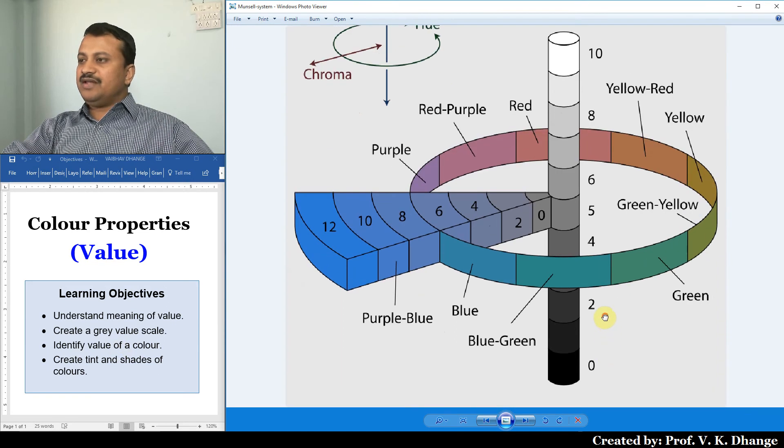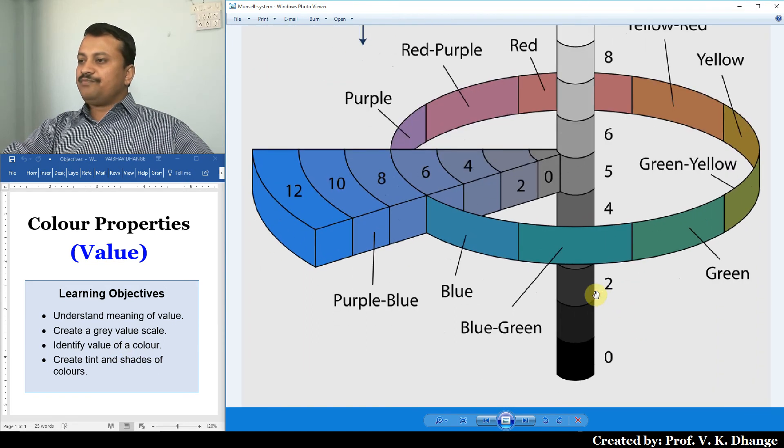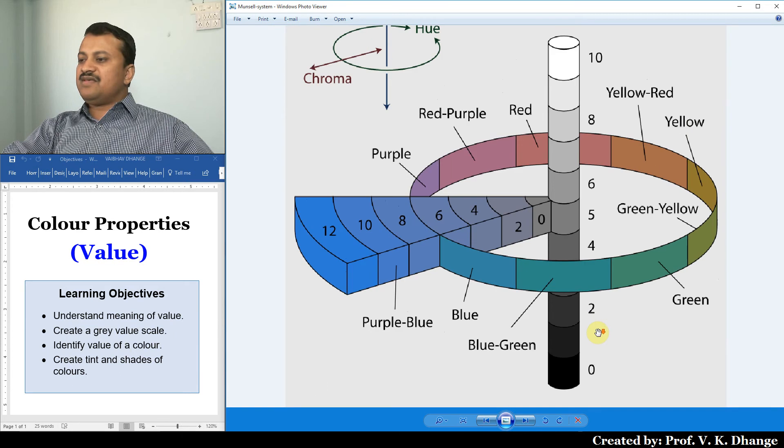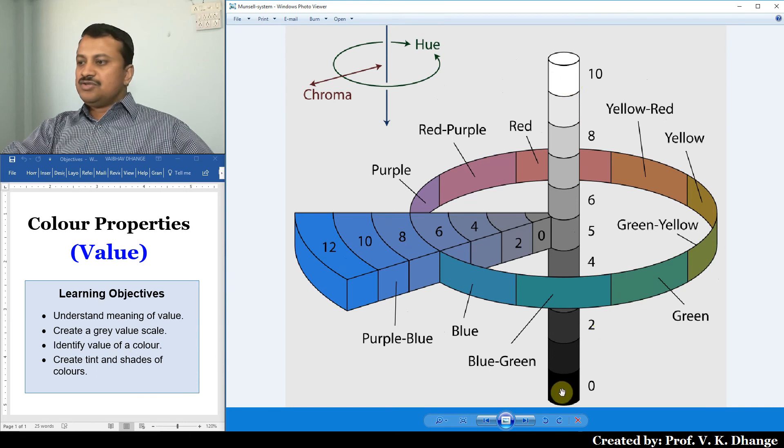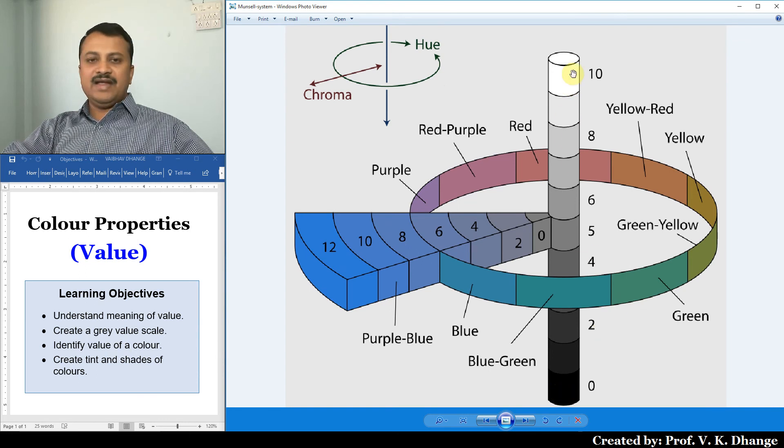As shown in this image, the value can be scaled from 0 to 10, that is a 10 point scale. 0 indicates black and 10 indicates white. And all the intermediate numbers are indicated by gray colors. Sometimes, the value scale can be from 0 to 100.